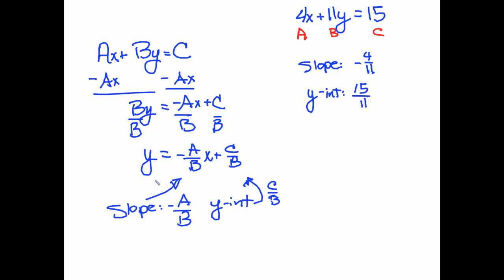So we did that all without doing any computation whatsoever. Let's do another one. 9x minus 3y equals 17.